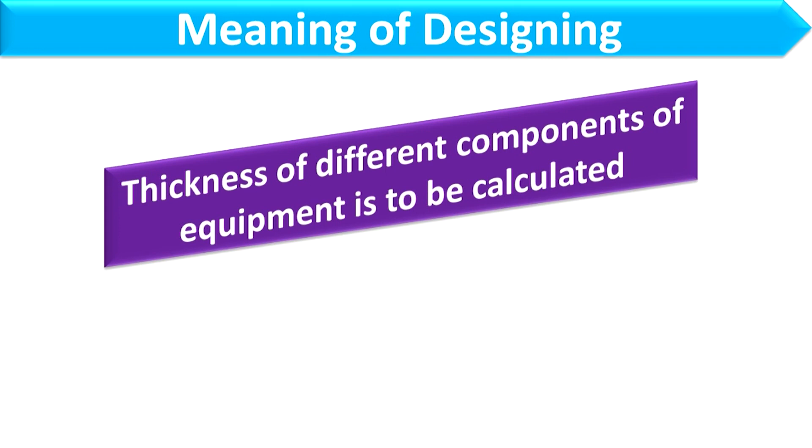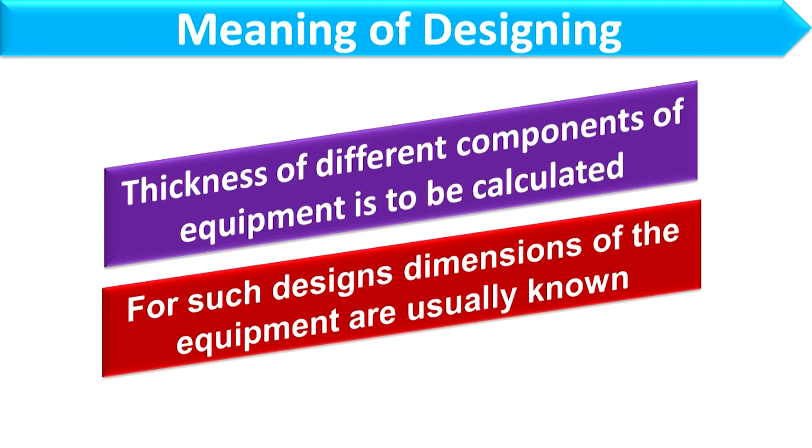The meaning of designing in this course is that the thickness of different components of the equipment is to be calculated. For a pressure vessel, when we consider different components such as shell, head, support, etc., we are going to calculate the thickness of these components or sections of the pressure vessel. For such designs, the dimensions of the equipment are usually known — height as well as diameter, which are the basic dimensions of the equipment — and we will only calculate the thickness of the different components.